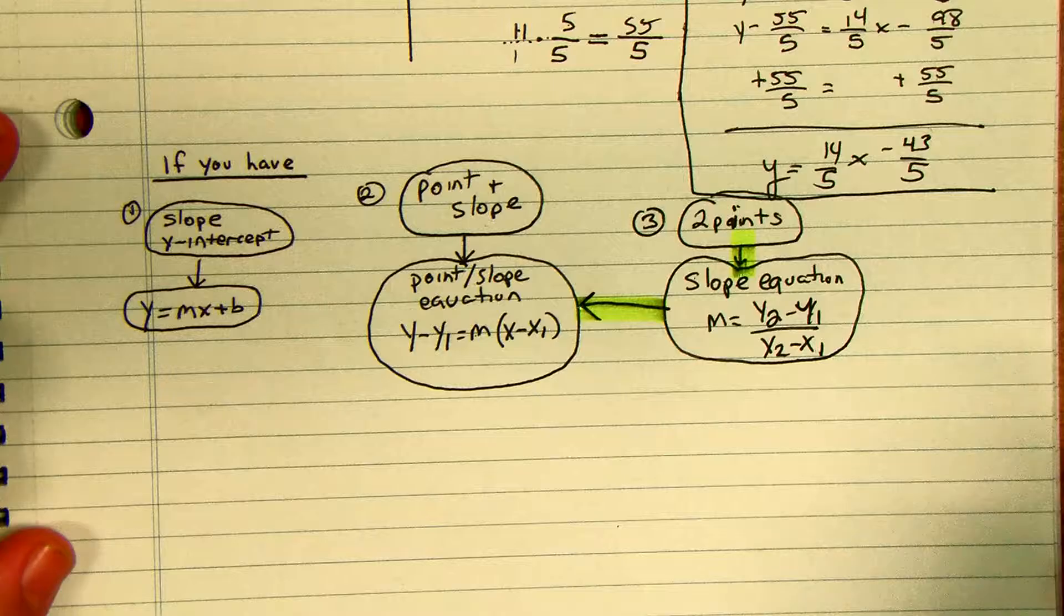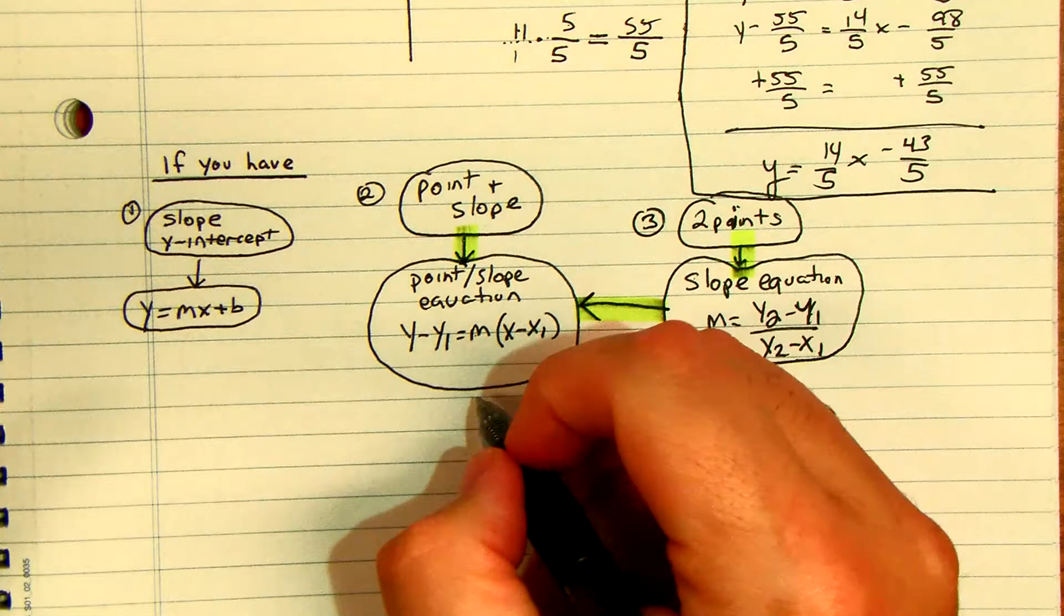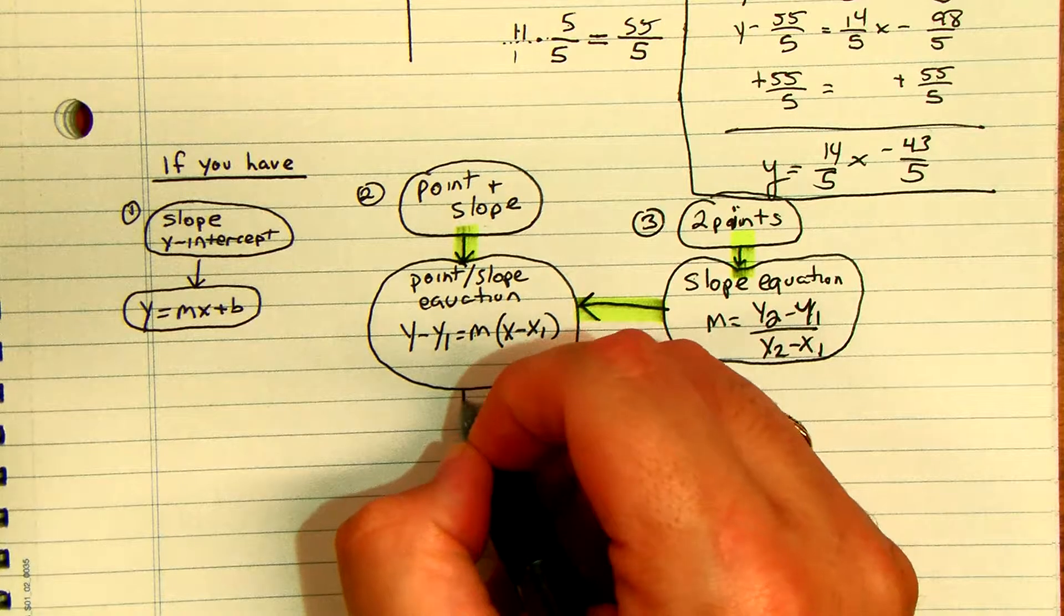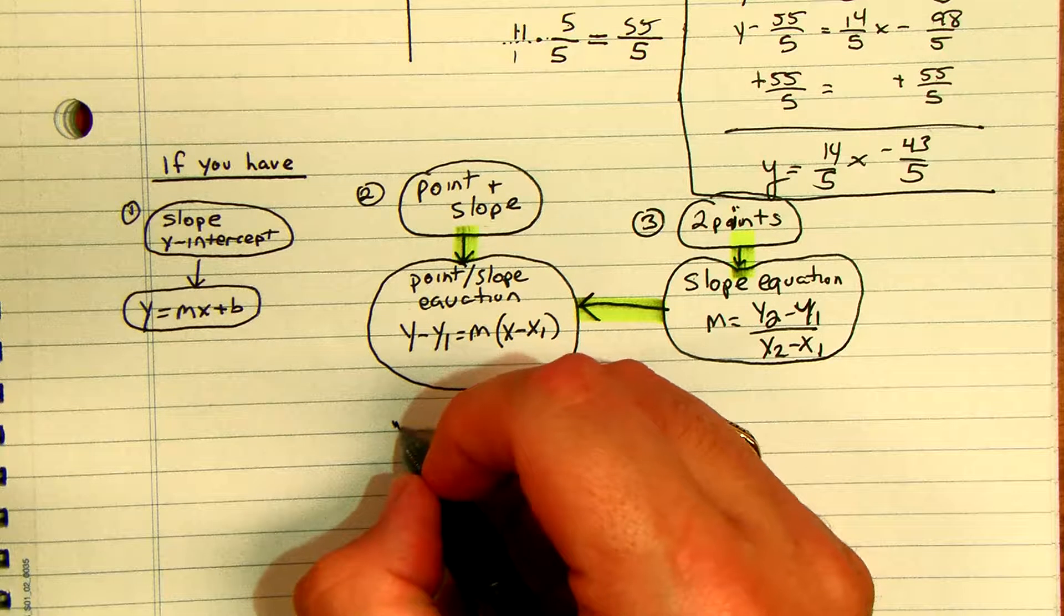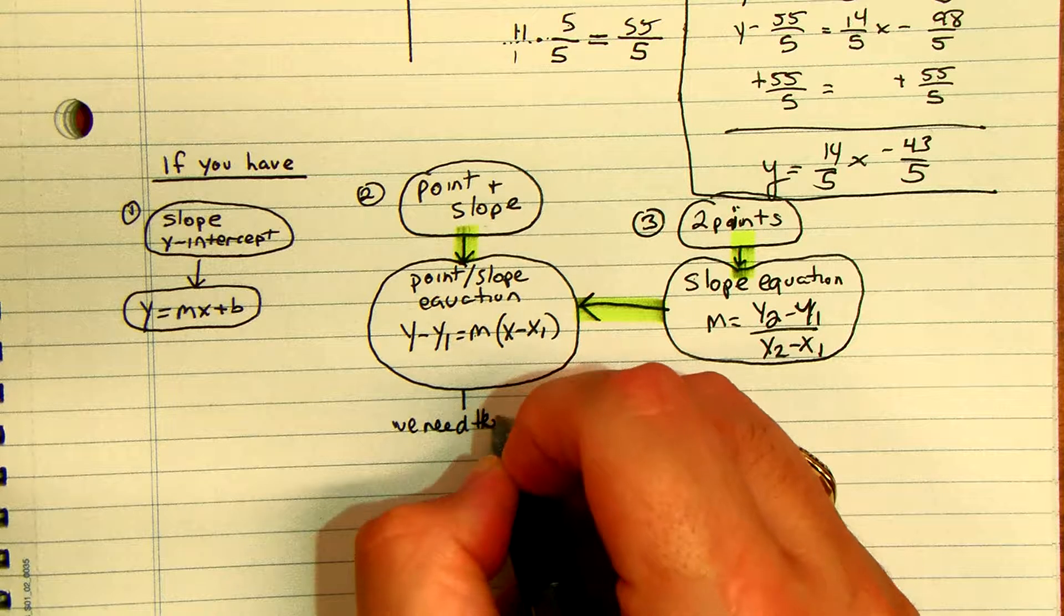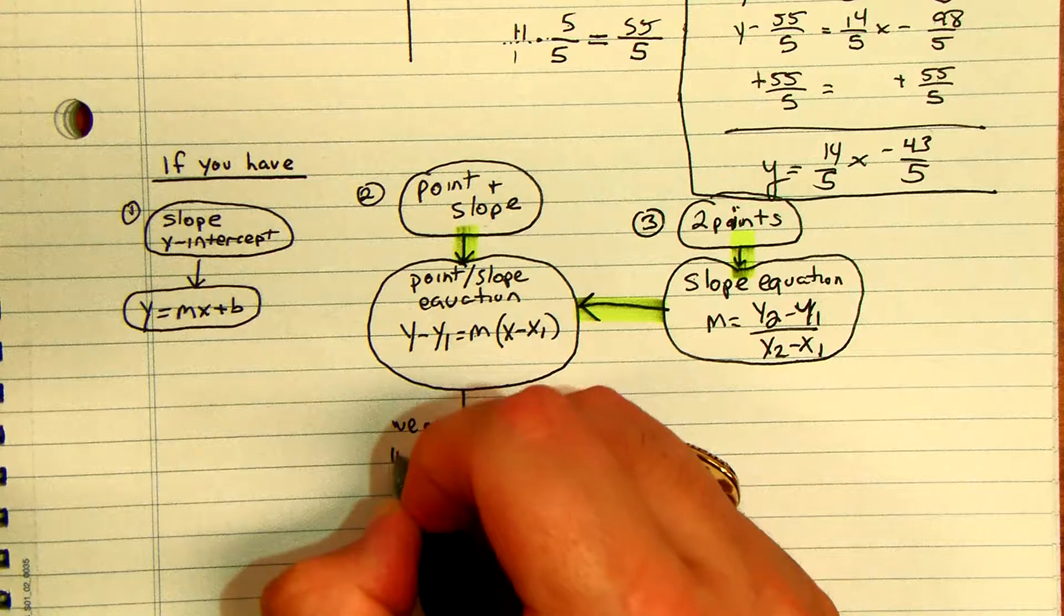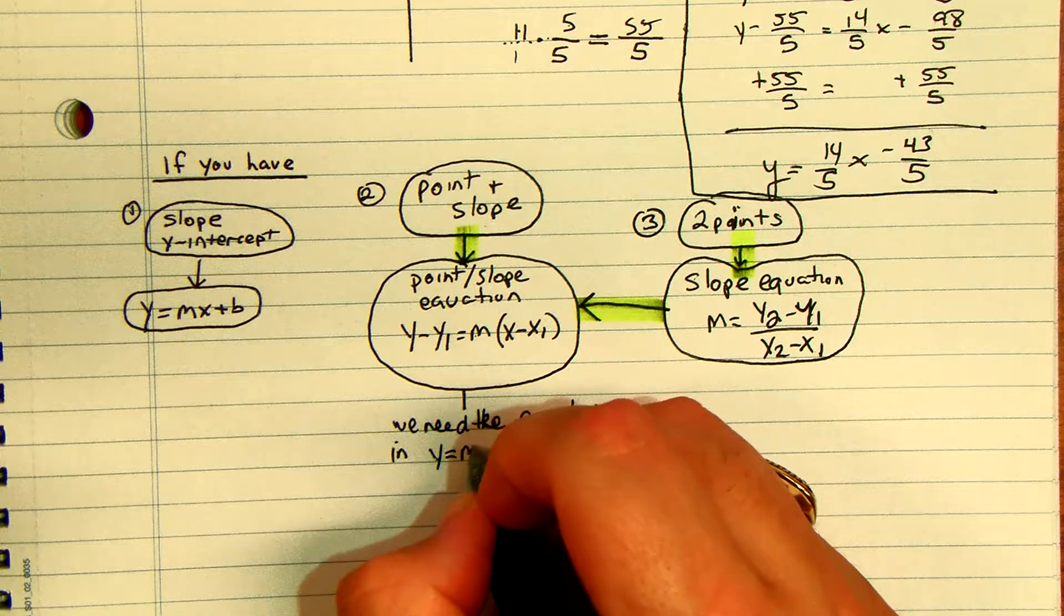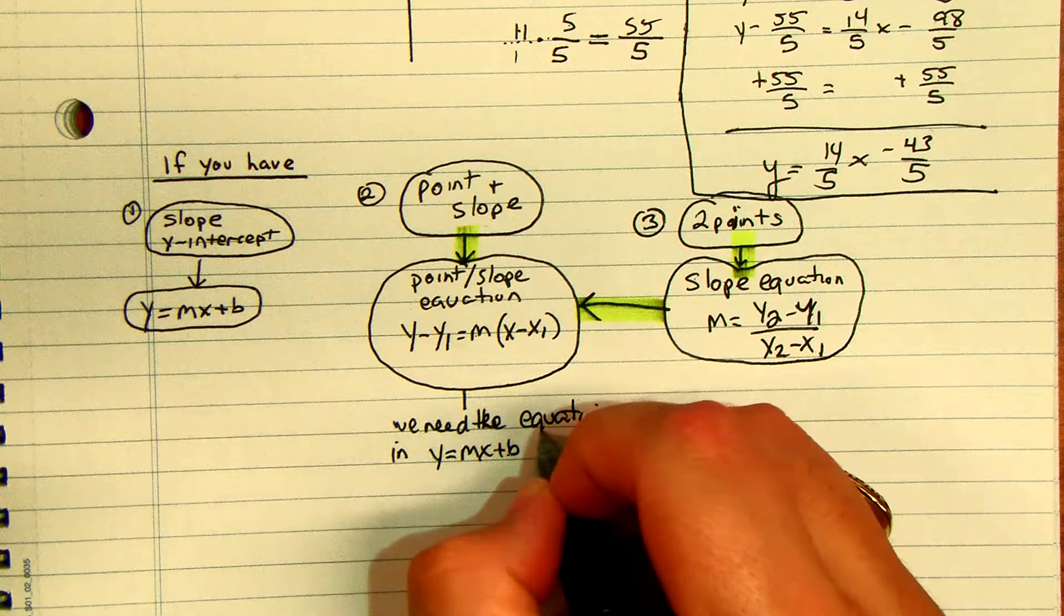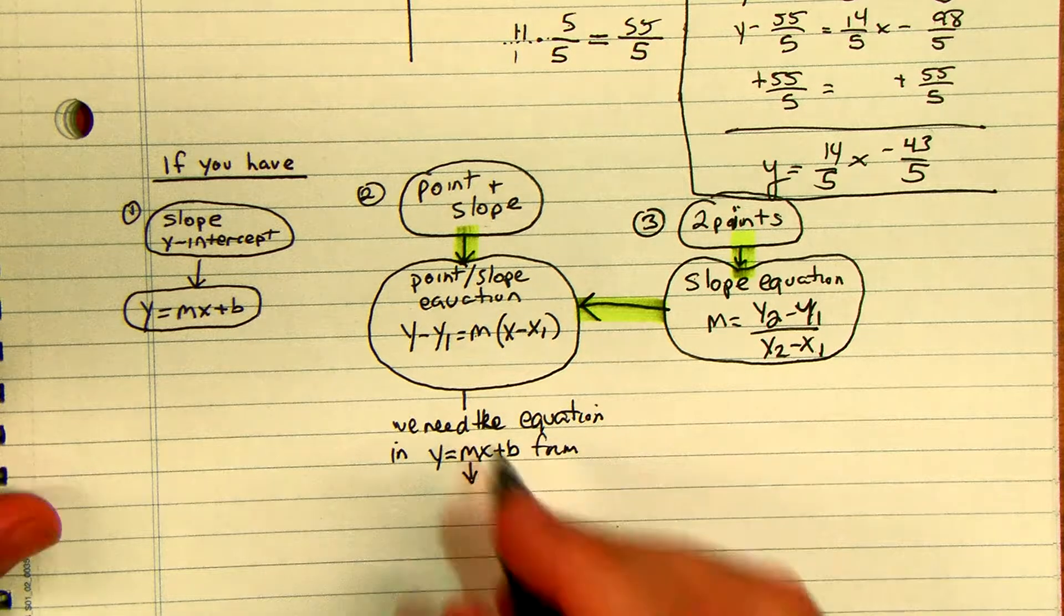If it's point-slope we just go right to the slope equation. Now if we need the equation in y equals mx plus b form, there's going to be a couple things that you're going to do right away.